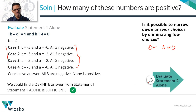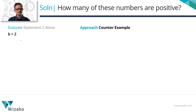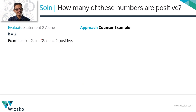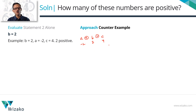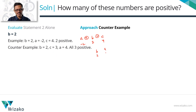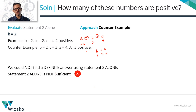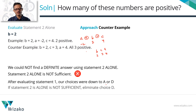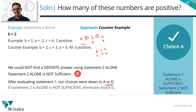With B = 2, consider: A = −2, B = 2, C = 4 — the gap between B and A is 4, gap between B and C is 2, satisfying the condition with two positive numbers. Alternatively, B = 2, A = 4, C = 3 — all three positive. We get different answers: two positive or three positive. Statement 2 does not give a unique answer. Since Statement 1 was sufficient and Statement 2 is not, eliminate D. Choice A is the answer.